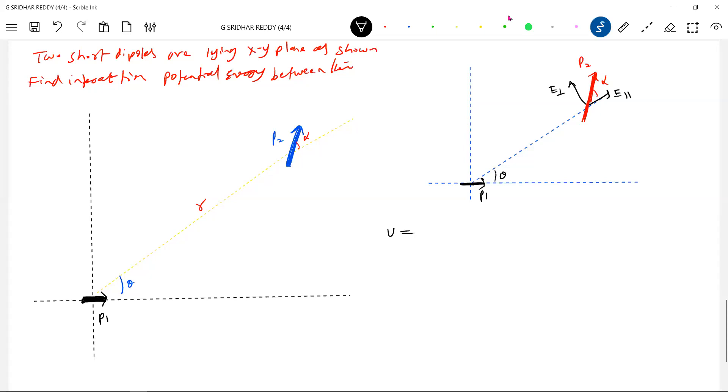I'll write in vector form first. This will be P2 bar dot E parallel plus P2 bar dot E perpendicular, which is P2·E_parallel·cosα minus P2·E_perpendicular times the angle between them, cos(90° - α).